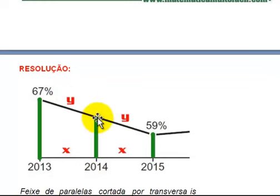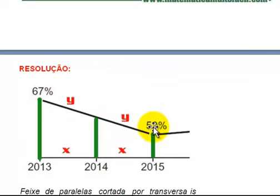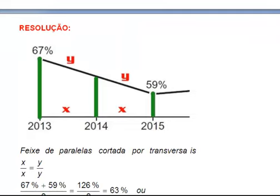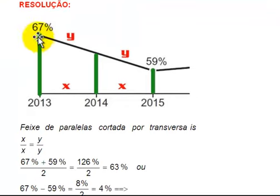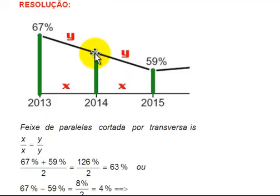Eu percebo que esse pontinho que quero calcular está igualmente distante do 67 e do 59. Então, basta fazer uma média aritmética: 67 mais 59 sobre 2. 126 sobre 2 dá 63. Esse pontinho, que é o que ele quer calcular relativo a 2014, é 63%.